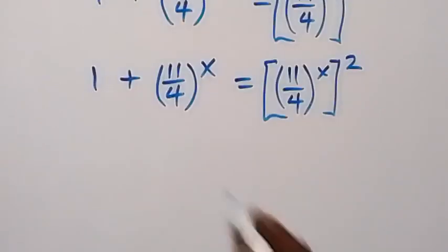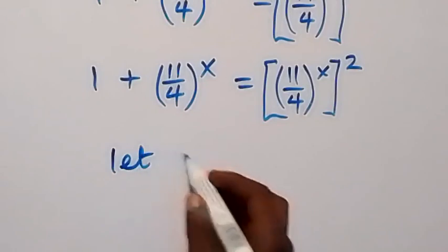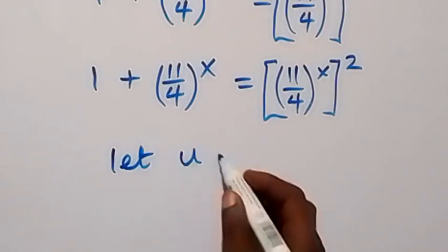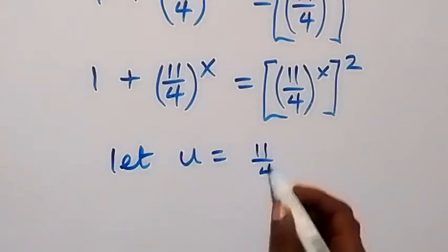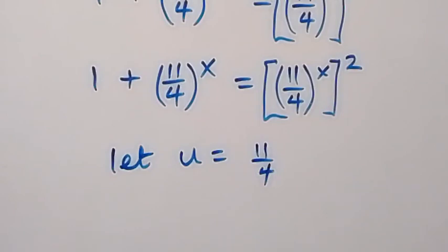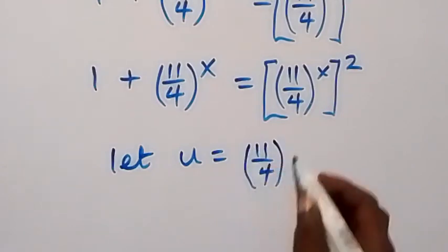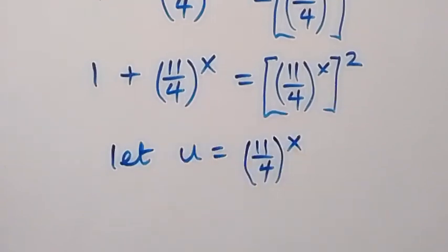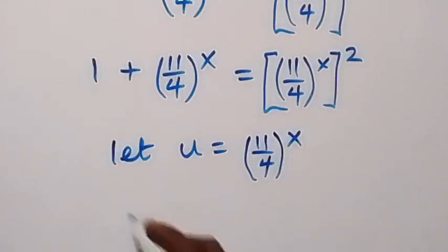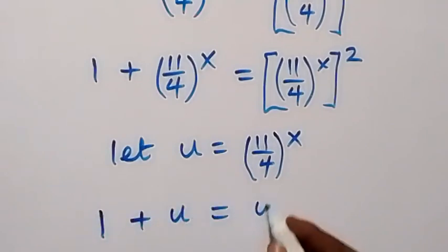We have 11/4 in common, so let u equal (11/4) raised to power x. We replace (11/4)^x with u, and this becomes 1 plus u equals u squared.